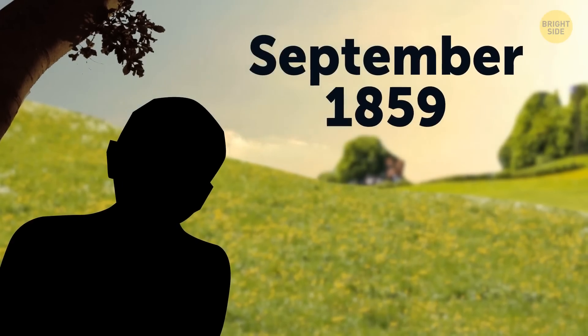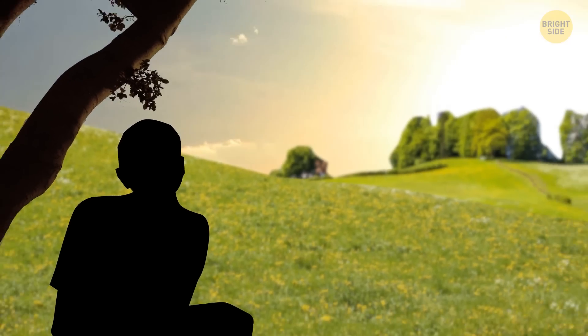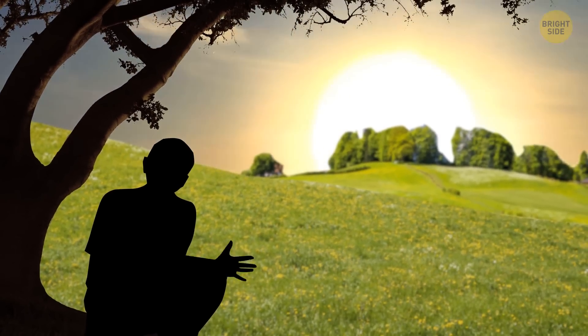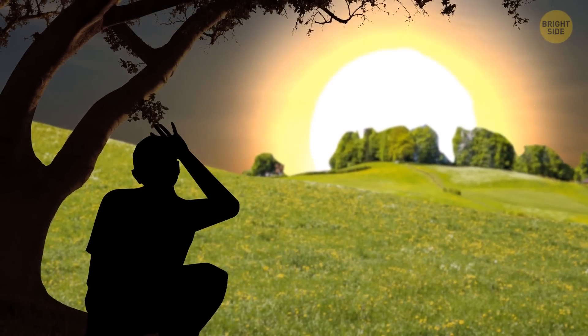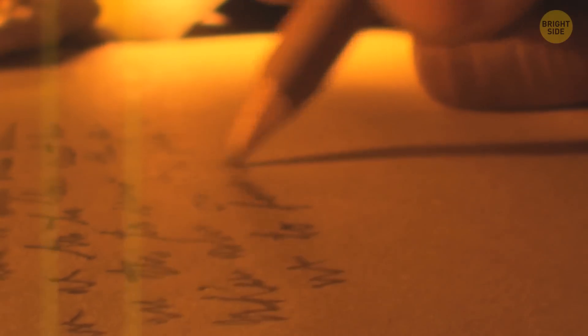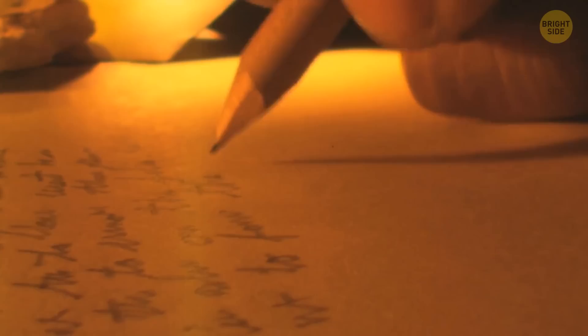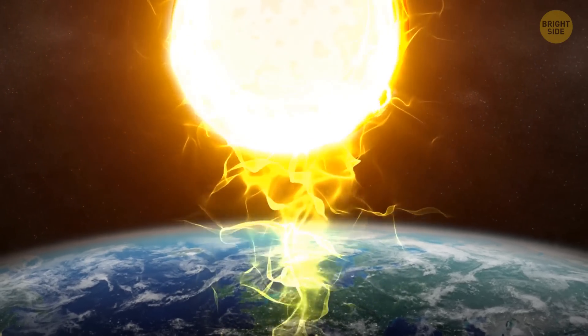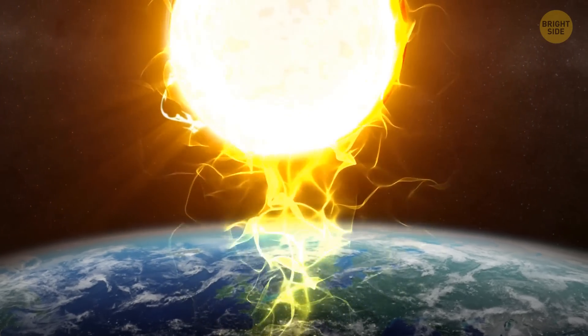In September of 1859, astronomer Richard Carrington was looking at the sun and suddenly saw a bright flare on its surface. He made a note of it in his records, but only realized how important it was a couple of days later.